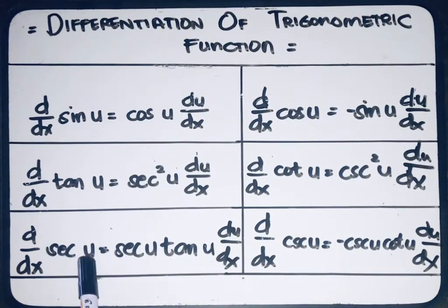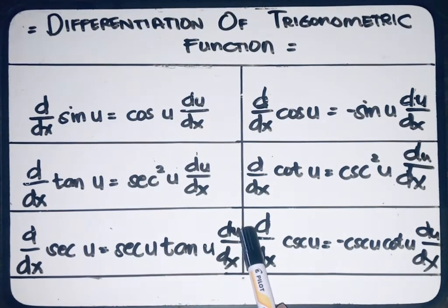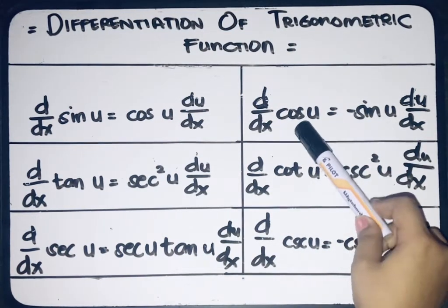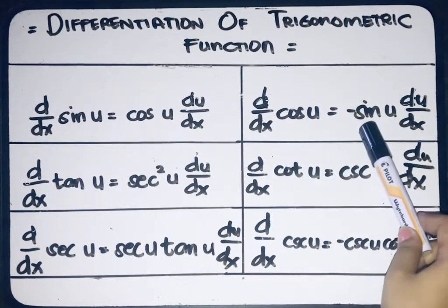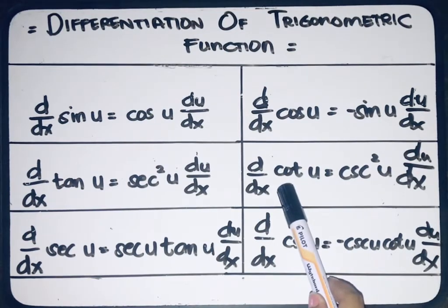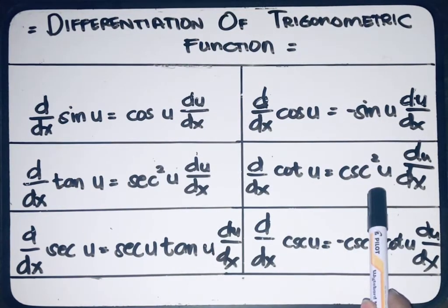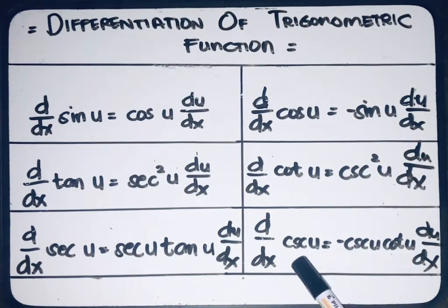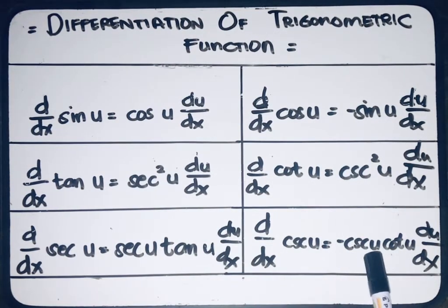The derivative of secant u with respect to x is equal to secant u multiplied to tangent u multiplied to the derivative of u with respect to x. The derivative of cosine u with respect to x is equal to negative sine u multiplied to the derivative of u with respect to x. The derivative of cotangent u with respect to x is equal to cosecant squared u multiplied to the derivative of u with respect to x. Lastly, the derivative of cosecant u with respect to x is equal to negative cosecant u multiplied to cotangent u multiplied to the derivative of u with respect to x.